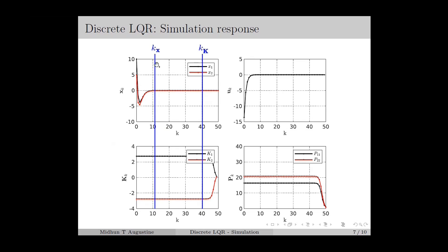We denote K_K as the time instant at which the feedback gain converges to its steady state values. For this example, K_K is around 40. Similarly, we denote K_X as the time instant at which the states converge to their steady state values, and from this figure we can see that K_X is around 12. In this case, K_K is greater than K_X. Therefore, we can observe that during the transient period of the states, the optimal feedback gain will be fixed.